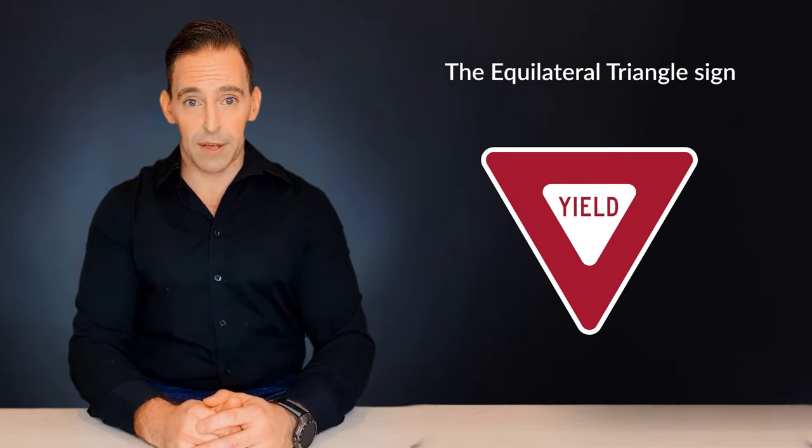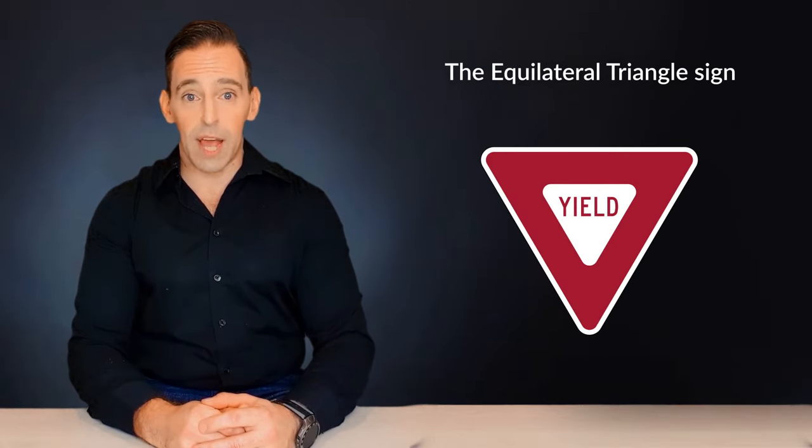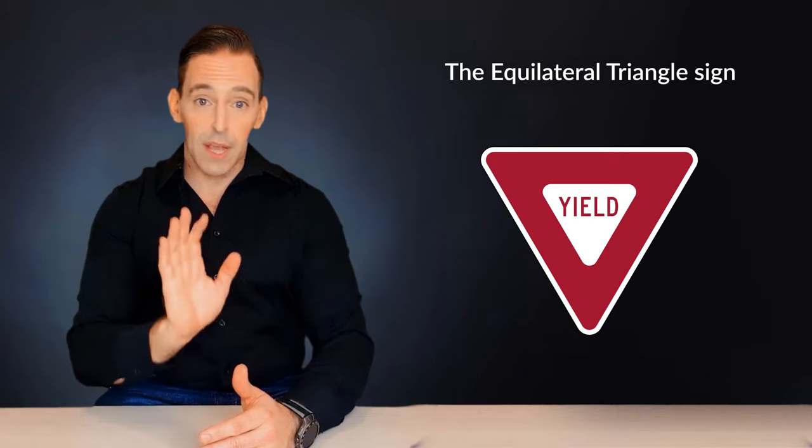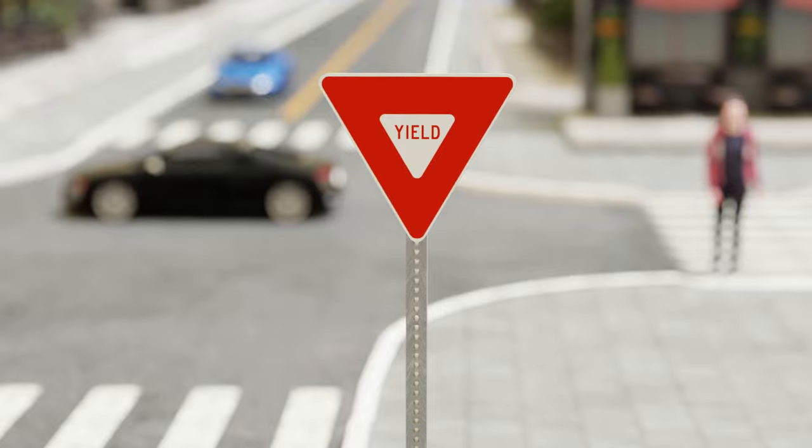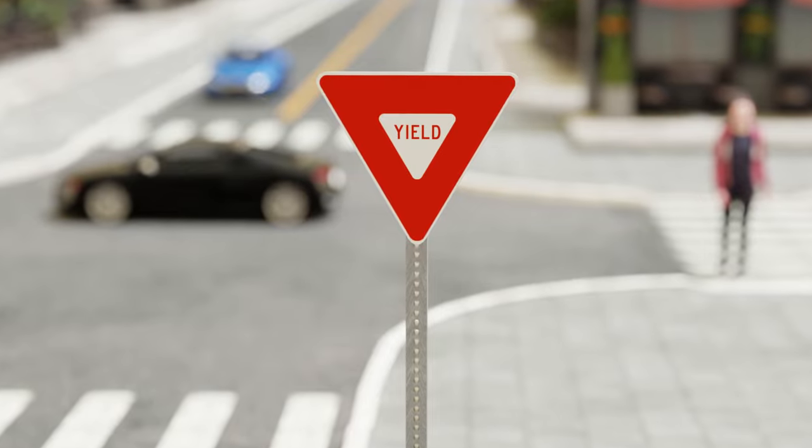Then we have the equilateral triangle. Like the octagon, the equilateral triangle road sign only indicates one action, to yield. Yield signs are always red and triangle shaped and indicate that you need to slow down and be prepared to stop.